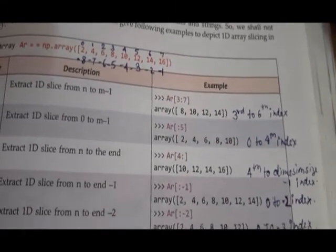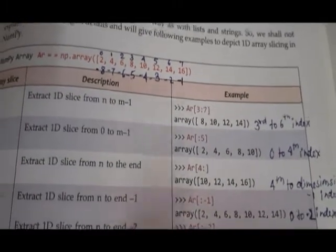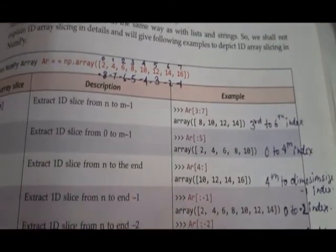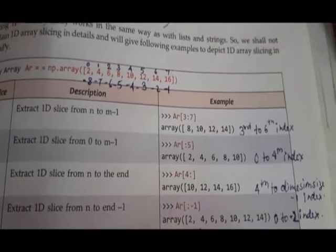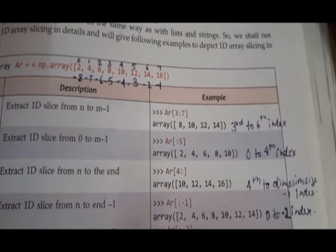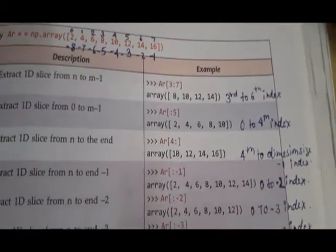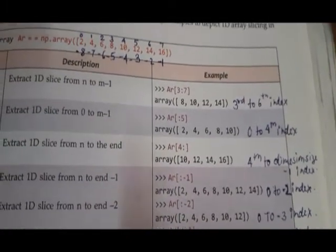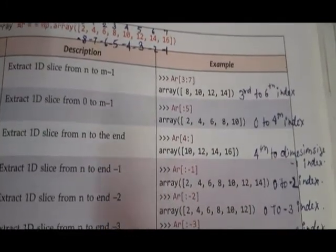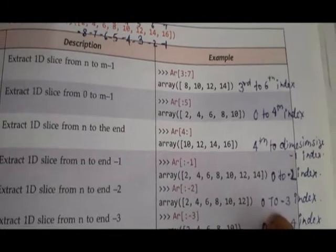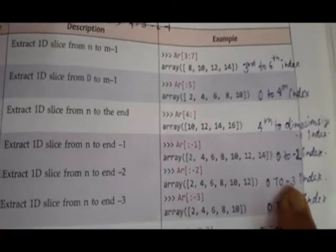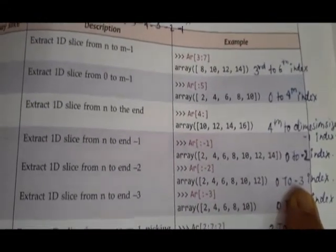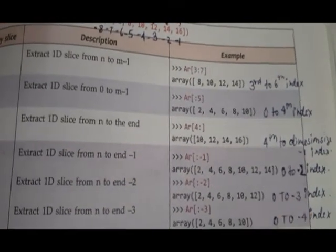Then [:-2] means from 0 up to minus 3 index (minus 2 minus 1). Then [:-3] means 0 to minus 4 index (minus 3 minus 1 is minus 4). I have marked all the negative and positive indices. I will show you on screen once again.